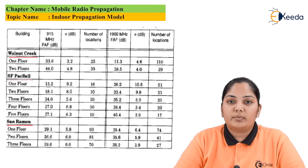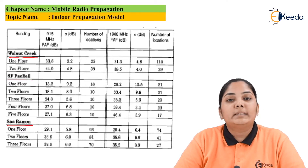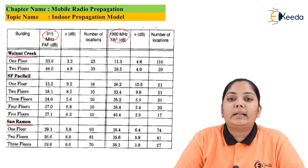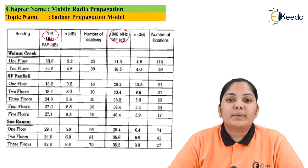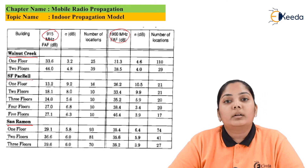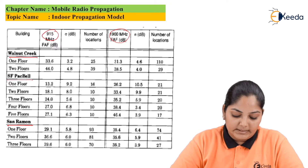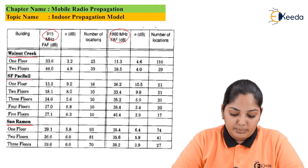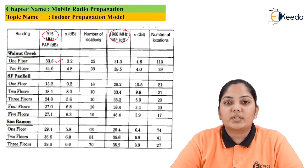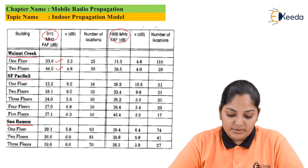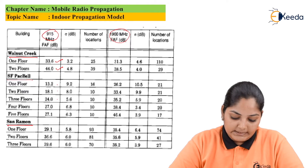For all the floors, we have the value of FAF — the floor attenuation factor — at a certain frequency, along with the value of sigma in dB and the number of measurement locations. Two tables are provided covering frequencies of 915 MHz and 1900 MHz. As we can see, the floor attenuation factor is increasing as the number of floors increases. For example, it is 33.6 dB for the first floor and 44 dB for the second floor. In the five-floor example, the attenuation factor constantly increases up to 27.1 dB.